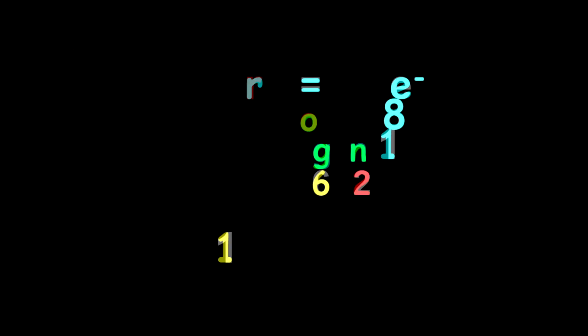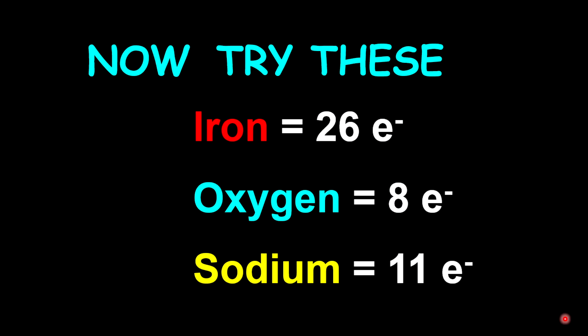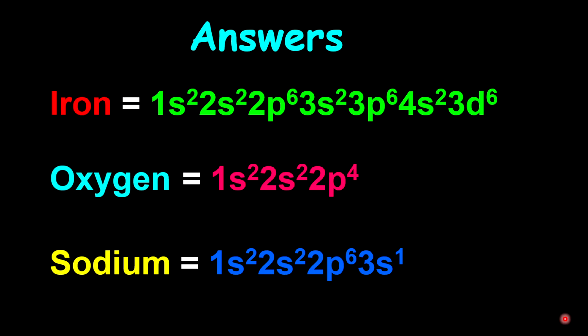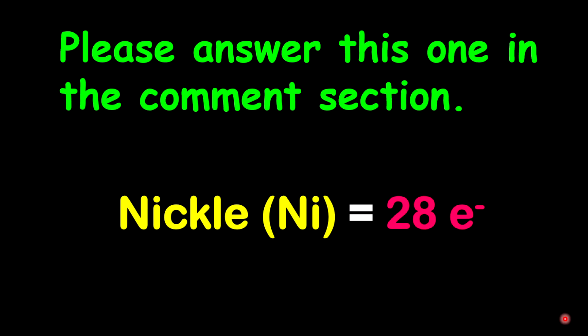Now I want to show you some practice examples. Pause the video and try all three — iron, oxygen, and sodium — then come back for the answers. Now that you've completed them, let's check to see if you're correct. As a further activity, I want you to work out the electron configuration for nickel and put it in the comment section. I'll check it and comment back to make sure you're correct.